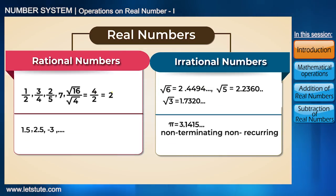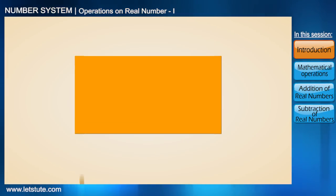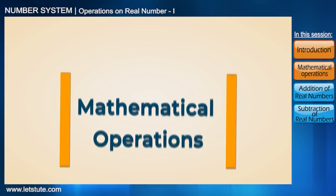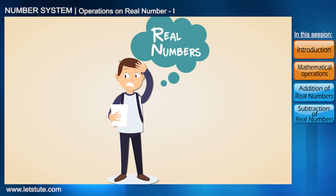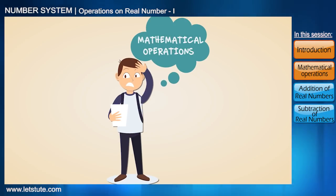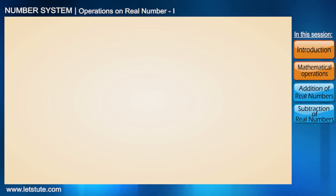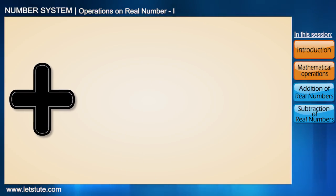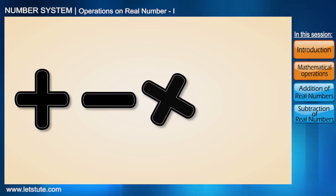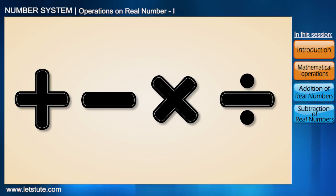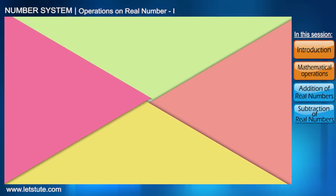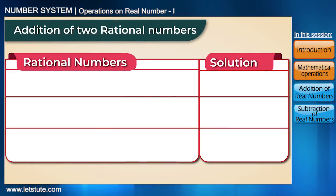In this session, we are going to learn about mathematical operations on real numbers. The four basic mathematical operations are addition, subtraction, multiplication, and division. Let's see what happens when we add two rational numbers.